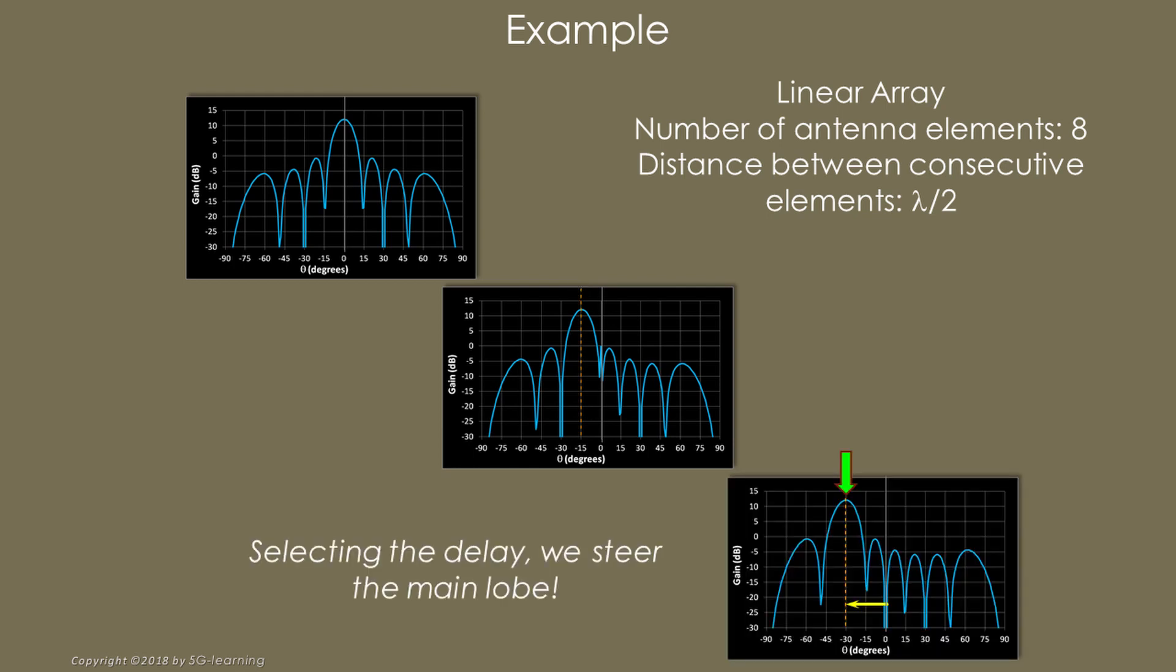In conclusion, selecting the delay, delta, we can steer the beam. Another way to visualize the steering capability of antenna arrays is representing the pattern in polar coordinates.